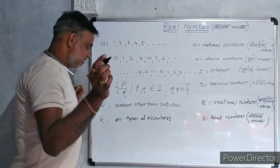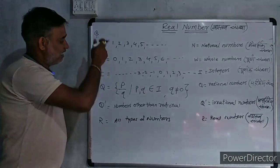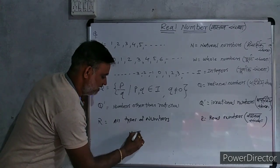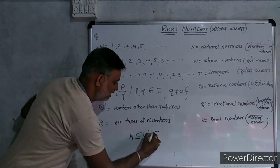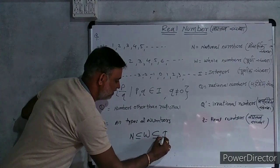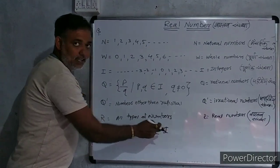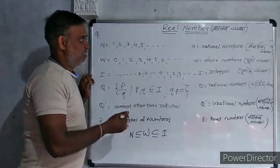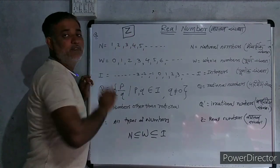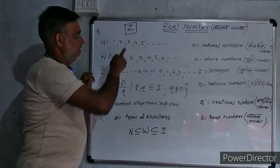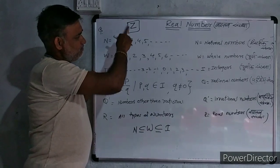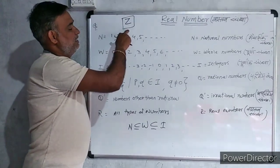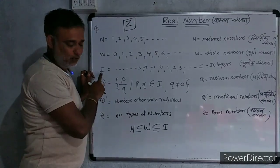In last chapter, we learned subset relation. If you write this by subset relation, we can write: Natural number is subset of whole number. Whole number is subset of integer. Here, integer we represent by I in CBSE and in state patterns. Integers are represented by the alphabet Z also. And the Z is pronounced as Zed. If at any point they are represented by Z, don't be confused. They are integers.